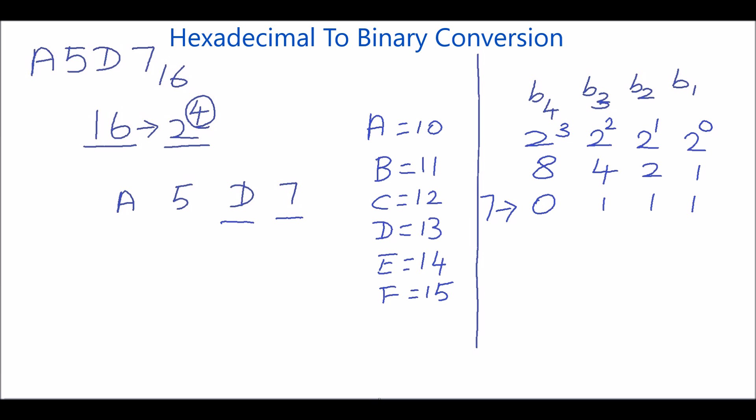The digit D is equivalent to 13, which is the sum of 8 plus 4 plus 1. So, put 1 in bit 4, bit 3, and bit 1 positions and put 0 in bit 2.